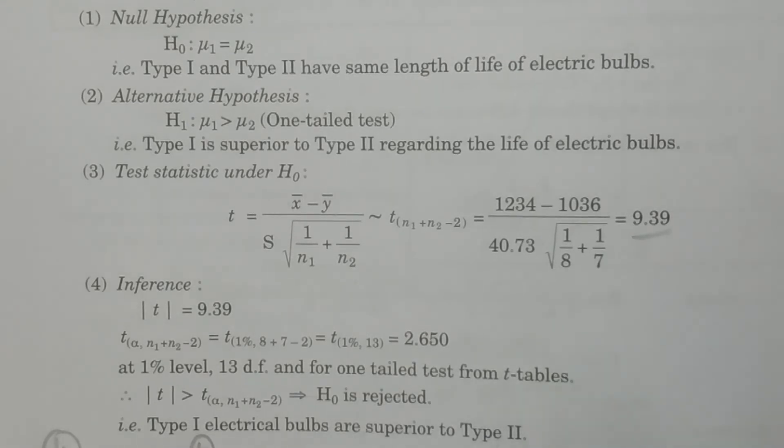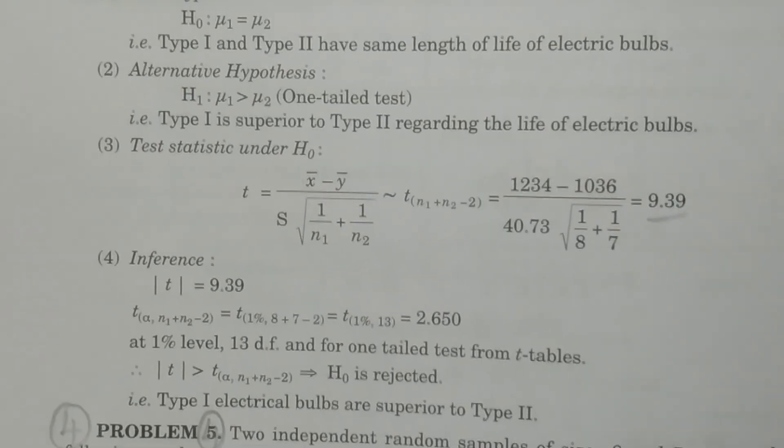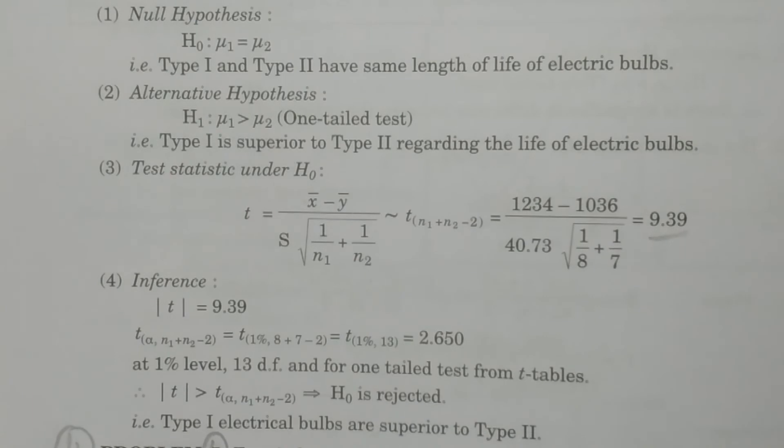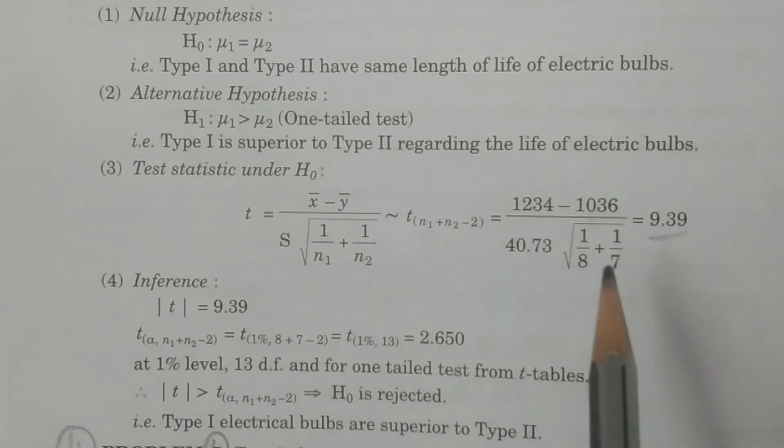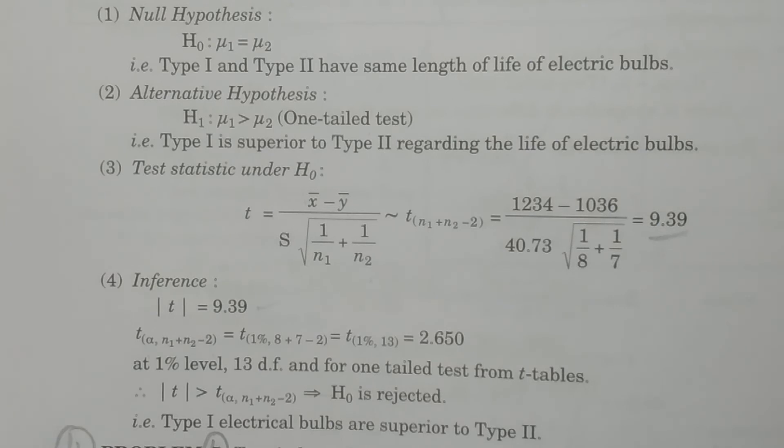So now what you have to consider in the inference is the final comparison and conclusion. In the comparison and conclusion, what you have to calculate is modulus of t first of all, that is 9.39.